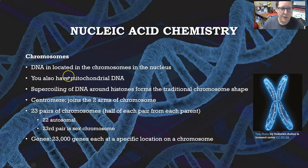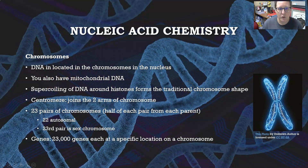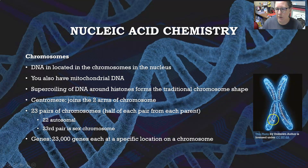DNA is located in the chromosomes in the nucleus; you also have mitochondrial DNA in your mitochondria. The supercoiling of the DNA around histones will form the traditional chromosome X shape that we often see represented, which is seen in the cell as it divides.